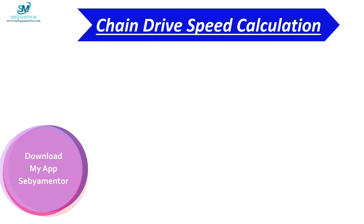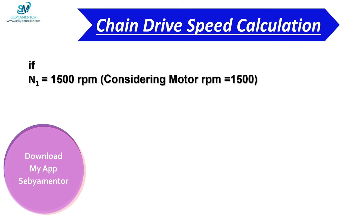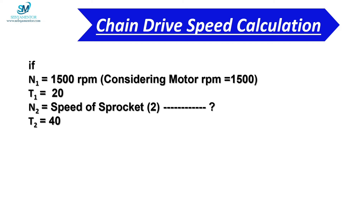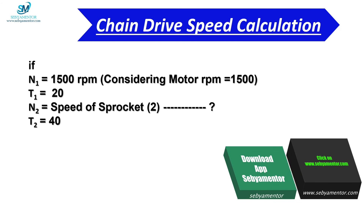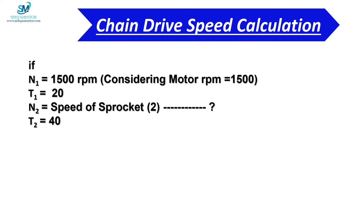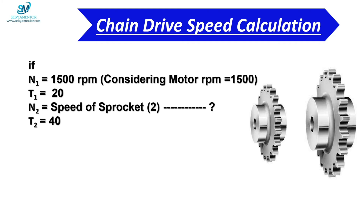Let's see with an example the calculation of chain drive speed. N1 = 1500 rpm, considering the motor RPM is 1500. T1 = 20, which is the number of teeth of sprocket 1. N2 is the speed of sprocket 2, which is the value we have to calculate. T2 = 40, which is the number of teeth of sprocket 2. To get the values of T1 and T2, we count the number of teeth in the smaller and larger sprockets.